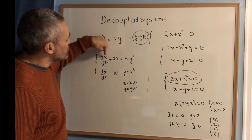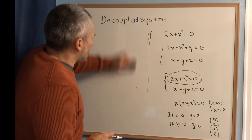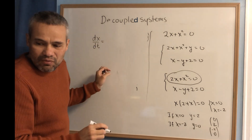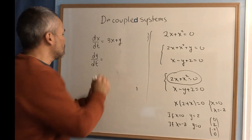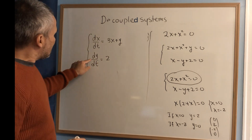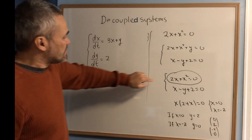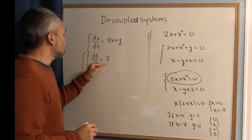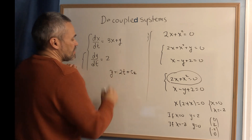In this video we are going to consider decoupled systems, meaning one of the differential equations only depends on one function. For example: dx/dt equals 3x plus y, and dy/dt equals 2. The reason it is decoupled is because the second equation only has the function y of t — it doesn't have x. So we solve that one first.